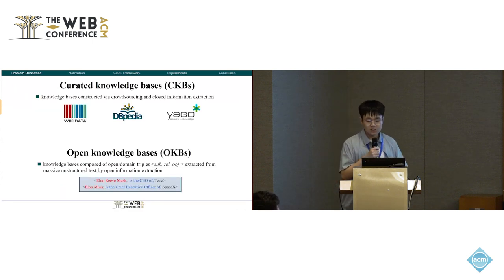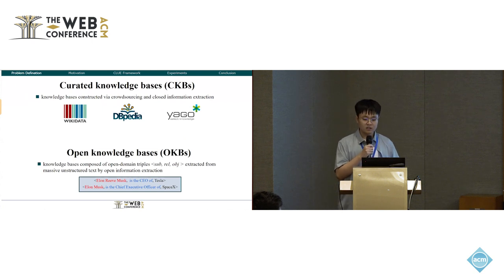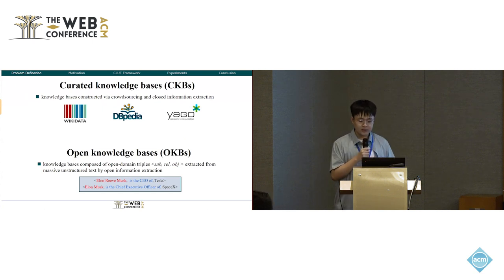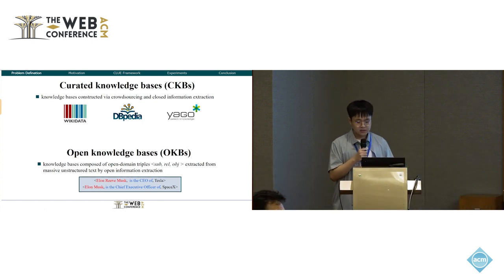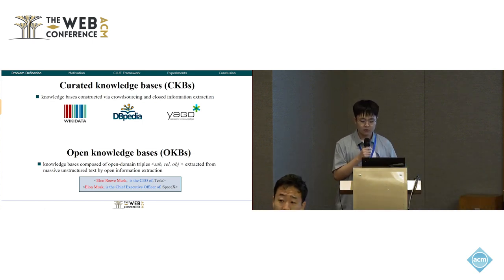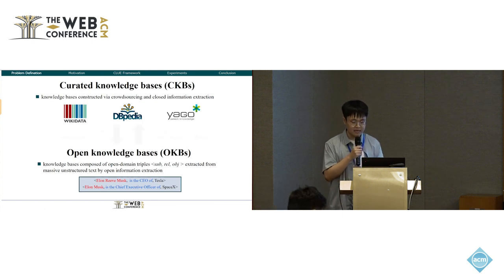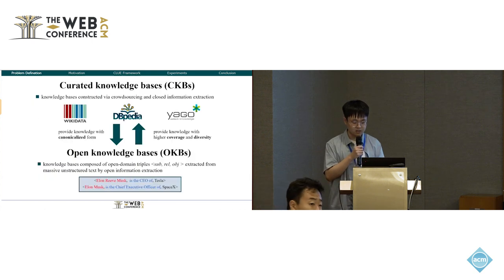First, let's talk about the problem definition. Generally, knowledge bases can be classified into two types: curated knowledge bases and open knowledge bases. CKBs are constructed via cross-sourcing and closed information extraction, and here are some notable examples of CKBs.